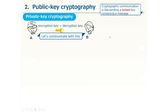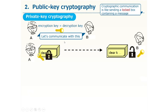Let me explain how it works, starting again with the conventional private key cryptography. With private key cryptography, Mr. A and Ms. B agree with one another to communicate using this key. For sending a message, Mr. A puts the message in a box and locks it as a ciphertext and sends it off to Ms. B. Then Ms. B uses the key to open the box and read the message inside. This common key should be kept secret between Mr. A and Ms. B.